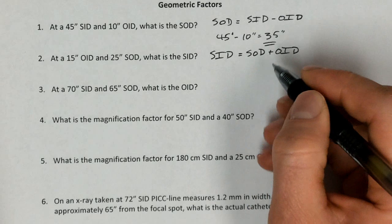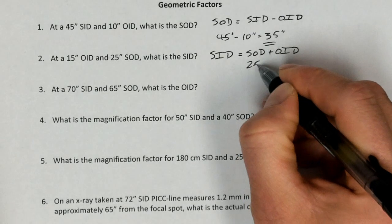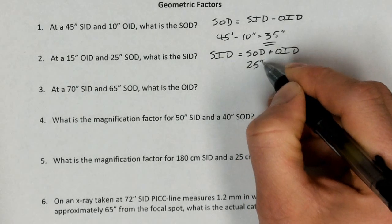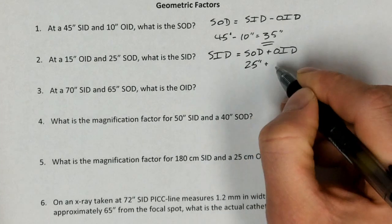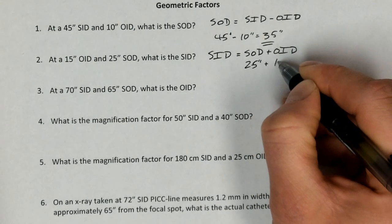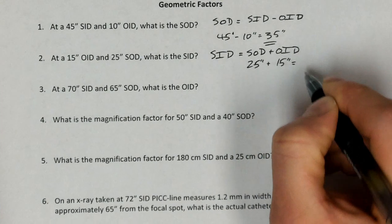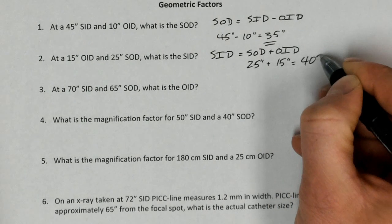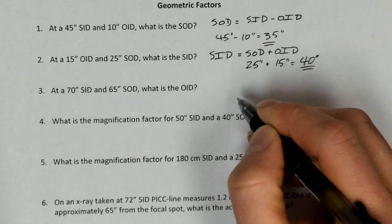So in this case, the source to object distance is 25 inches. The OID is 15 inches. And so when we add those together, we get 40 inches. This is a 40-inch SID, a very common SID.